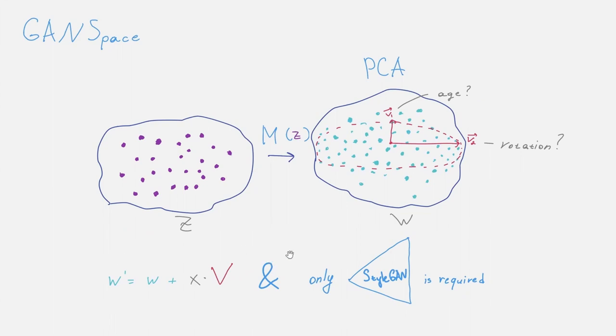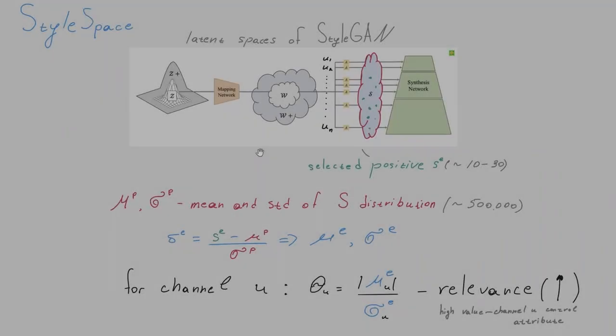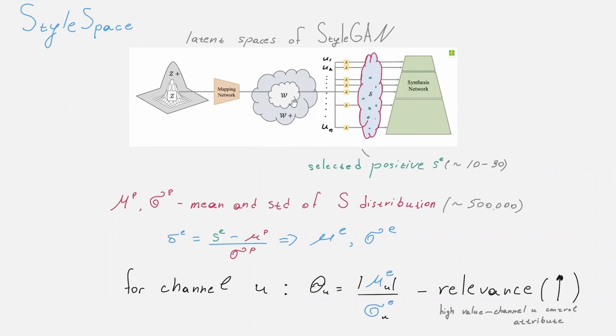Only a pre-trained generator is required to find PCA directions. The search for directions can be done not only in W space, but also in a more-disentangled space, Style space.